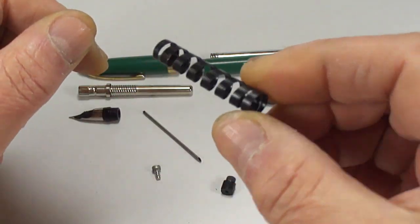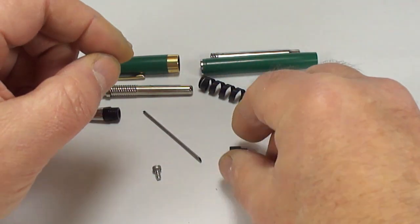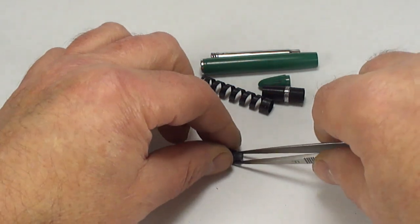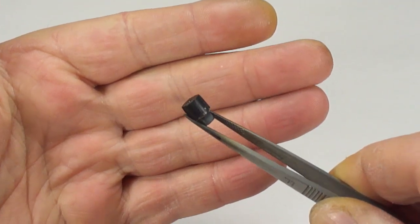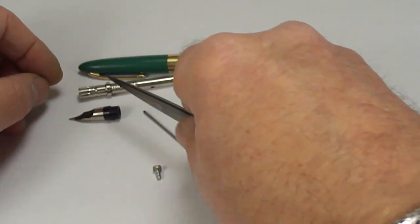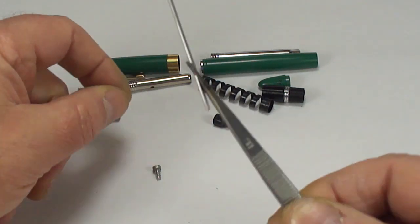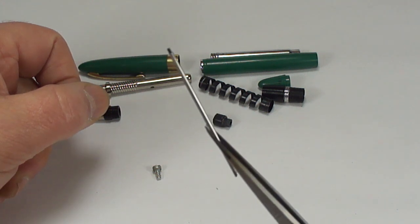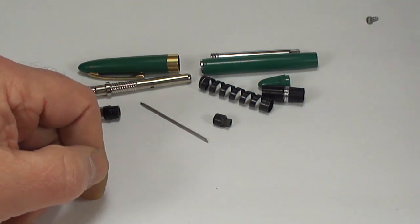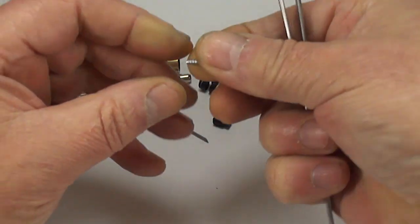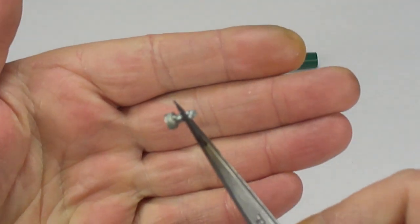Inside the barrel we've got the spring. This little black piece here, in fact let me get my little tweezers. There we go. So this little piece here is the sack plug, that goes inside the sack protector.